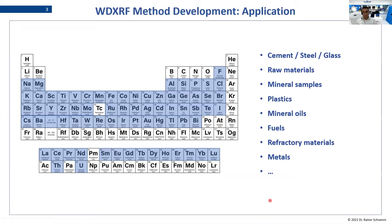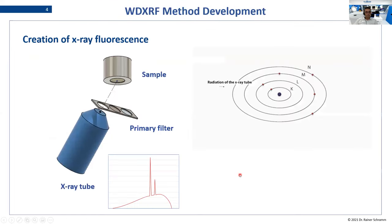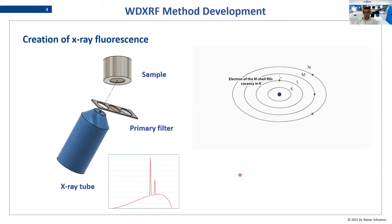XRF is used in many different applications — you can see here a big list. When we look at elements in the real world, from fluorine to uranium, this is the typical range people use Wavelength Dispersive XRF. You can also measure starting from beryllium, but then you need a specially equipped instrument. So there you have to make high efforts to get those elements measured.